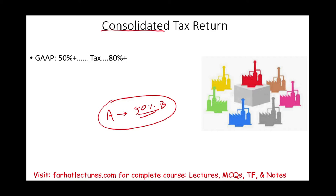What does being in control mean? It means they can elect the board of directors, and the board of directors runs the company. If you can select the people to run the company, then you are in control. In fact, you can select yourself. If you own more than 50% of the stock of the other company, then you own the company.